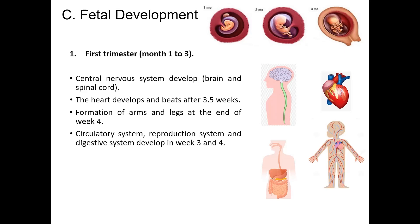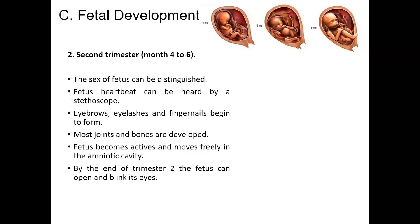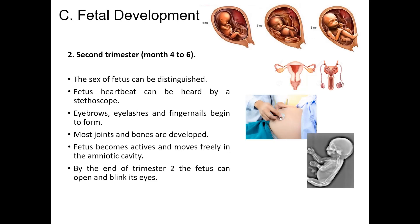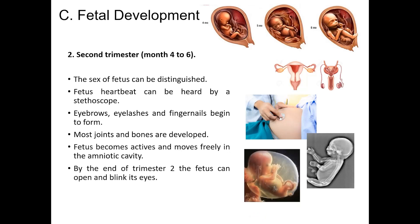By the end of the second month, the embryo is referred to as a fetus. In the second trimester, the basic body plan develops further. The sex of the fetus can now be distinguished. The fetal heartbeat can be heard by a stethoscope. Eyebrows, eyelashes, and fingernails begin to form. Most joints and bones are developed. The fetus becomes active and moves freely in the amniotic cavity. By the end of trimester 2, the fetus can open and blink its eyes.